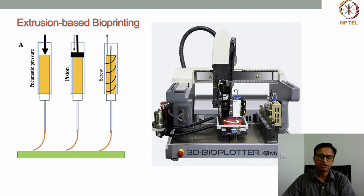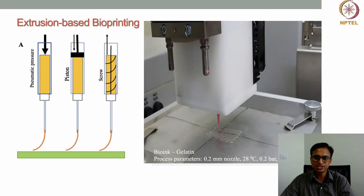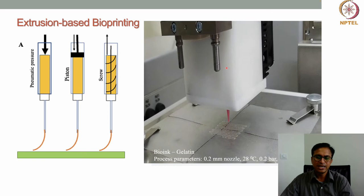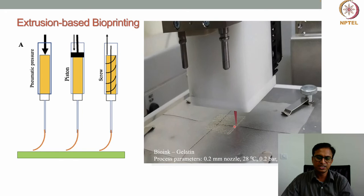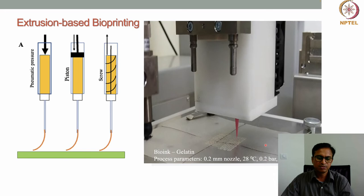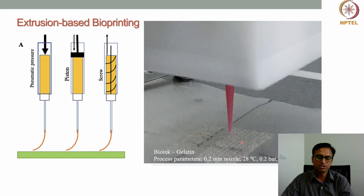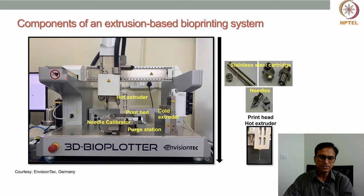This is the mechanism of extrusion-based bioprinting. Here is a video from our lab showing how extrusion-based bioprinting is actually done. The syringe is attached to the print head and the nozzle is attached to the syringe. This is a pneumatic-driven extruder. Gelatin solution is loaded into the syringe, and approximately 0.2 bar (200.2 bar shown) of pneumatic pressure is applied, causing the material to come out as a filament that is deposited on the print stage.